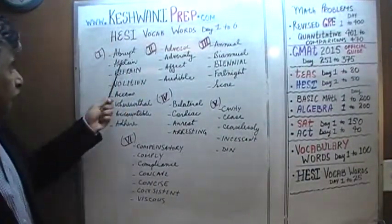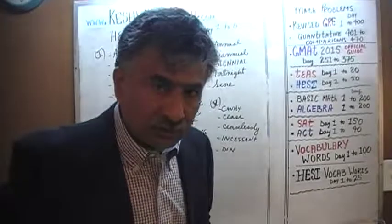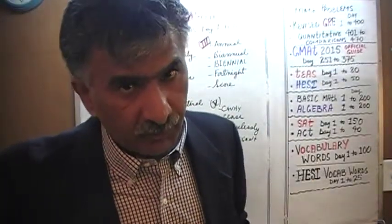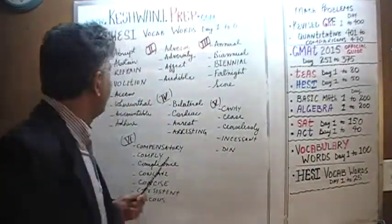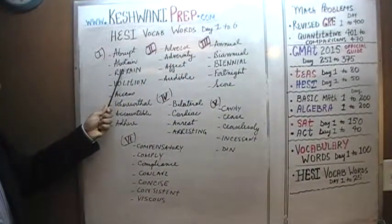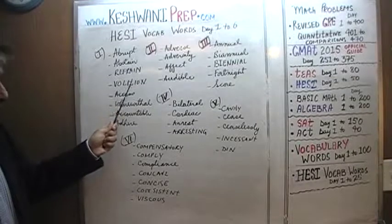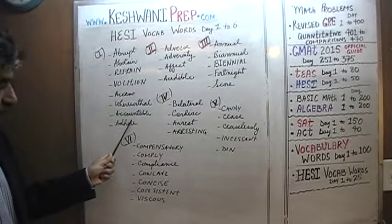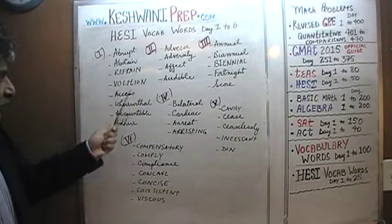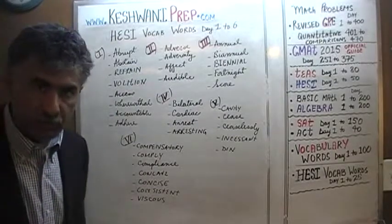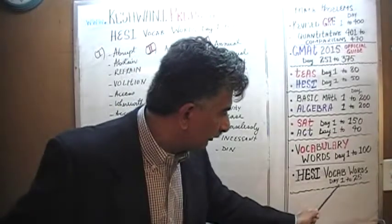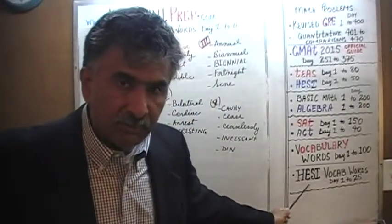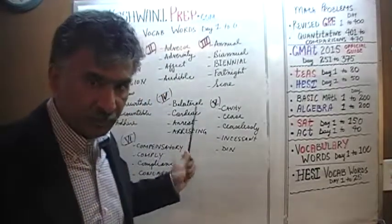Day number one. We're going to quickly go through the list of words — we're not going to go through the meanings. If you're interested in learning any of these words, you can watch the appropriate video. Here we go: abrupt, abstain, refrain, volition, access, wherewithal, accountable, and adhered. If there is anything here that you'd like to learn, just type in HESI vocabulary words day one. It doesn't matter whether or not you're preparing for HESI — you just want to learn the words.